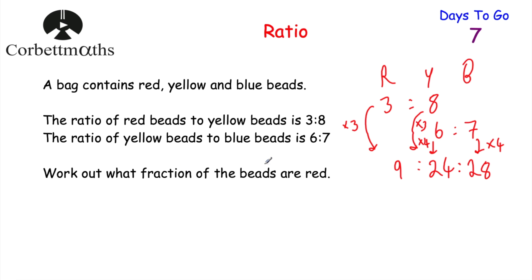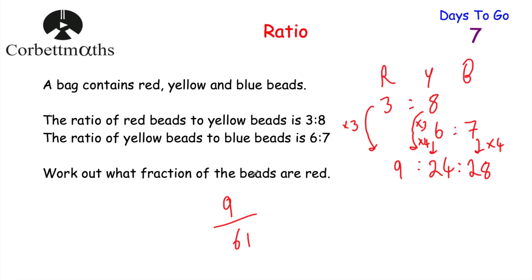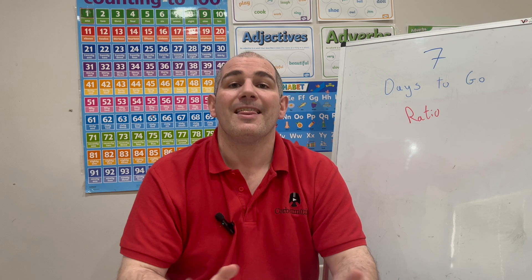The fraction of beads that are red: the numerator is 9 (the red part), and the denominator is the total — 9 plus 24 plus 28 equals 61. So 9/61 of the beads are red. Well done if you got that.